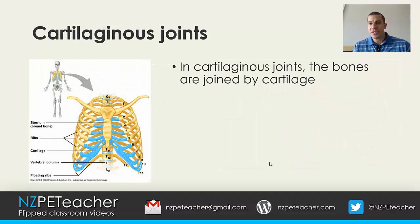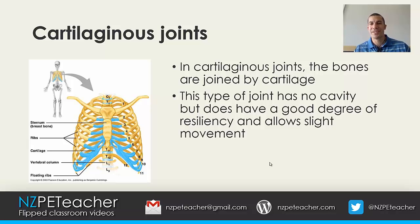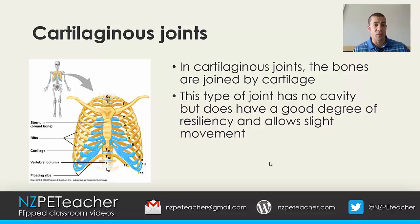Cartilaginous joints are joined together by cartilage. This type of joint again has no cavity, similar to the fibrous joint, but it does have a good degree of resiliency and allows a little bit of movement. Looking at the image, you can see that the ribs are joined to the sternum by cartilage.